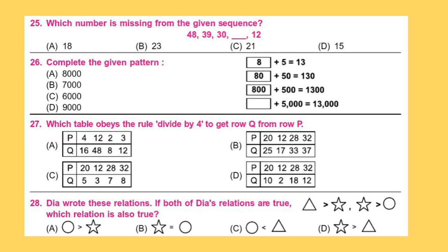Question 25. Which number is missing from the given sequence? 48, 39, 30, dash, 12.